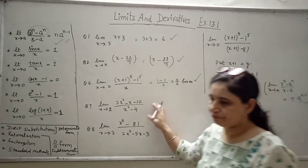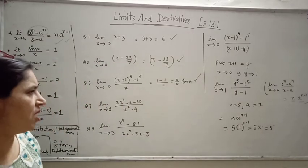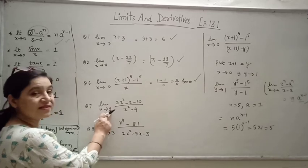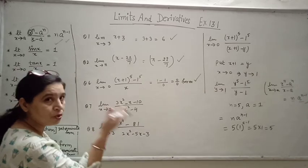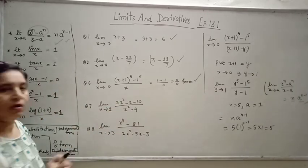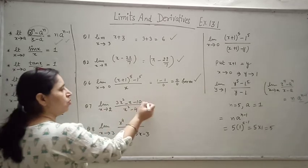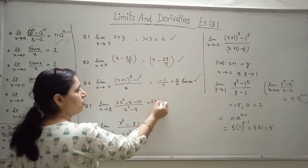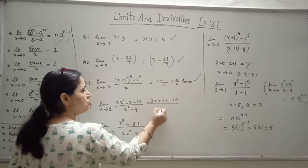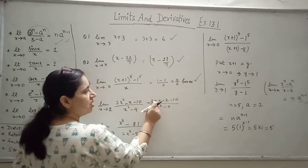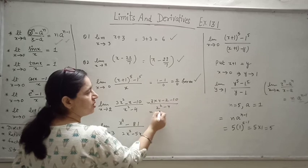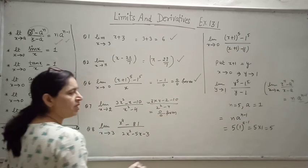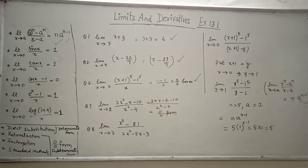Come to this question. The limit is x tending to 2. We put x equal to 2: 3 times 2 squared minus 2 minus 10 in the numerator gives 12 minus 12 = 0. In the denominator, 2 squared minus 4 = 0. So this is 0/0 form — indeterminate form.